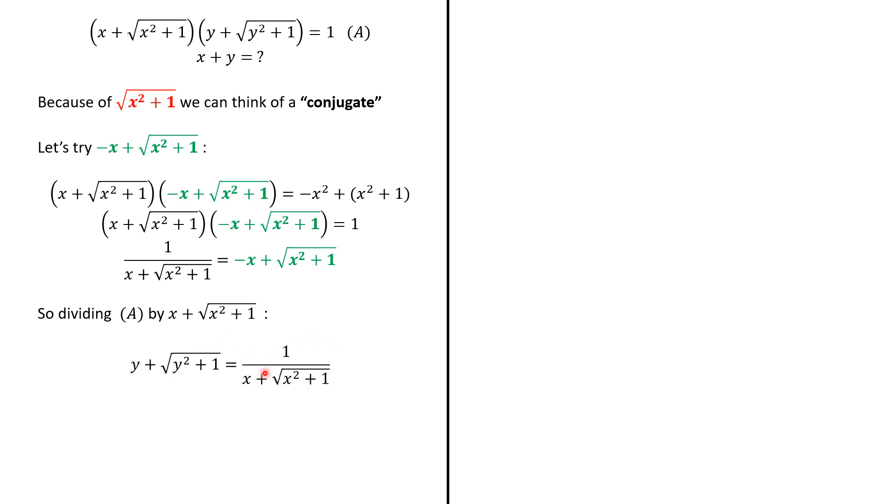We're going to have that y + √(y² + 1) equals 1 over the same number. But using this outcome, we have that y + √(y² + 1) = -x + √(x² + 1). So, we just rearrange the terms to have x + y = √(x² + 1) - √(y² + 1). Interesting.